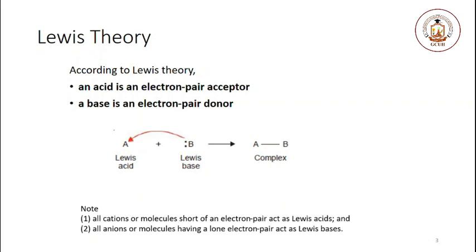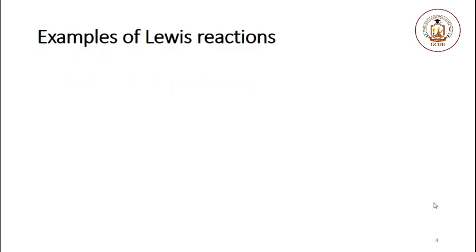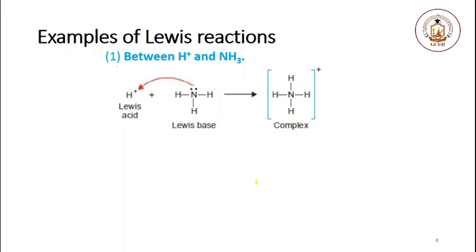It may be noted that all cations or molecules short of an electron pair act as Lewis acids, and all anions or molecules having a lone pair of electrons act as Lewis bases. Let's take examples of Lewis reactions — first, between the proton and ammonia.